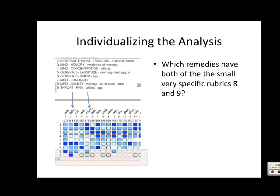Now, this is a picture of his analysis. Which remedies have both of the small specific rubrics 8 and 9? We're looking at 8 and 9 here in red. These are small rubrics - they have a few remedies in them. Here's 8 and 9 represented here. Kali-I and Rhus-tox are located here, and they both have these small rubrics.